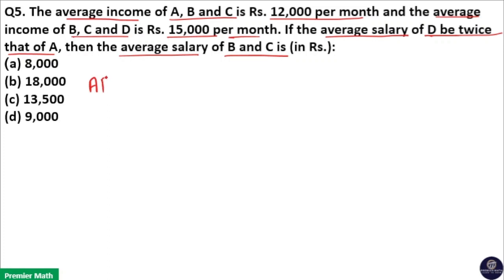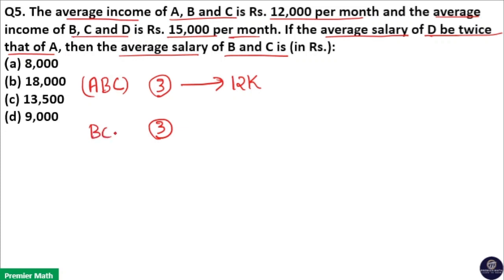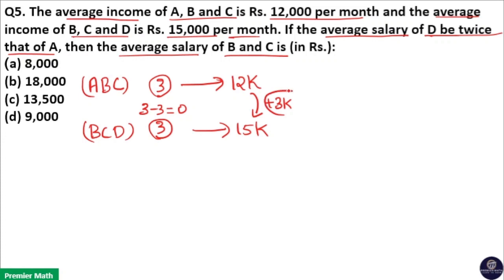Average income of 3 people A, B and C is 12,000 rupees, and average income of 3 people B, C and D is 15,000 rupees. Before and after there are only 3 people, so the left hand side difference is 3 minus 3 equals zero, but on the right hand side there is an increment of 3,000 rupees in the average income — that is, when D replaces A there is an increment of 3,000 rupees.